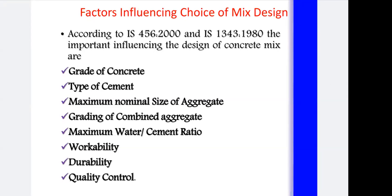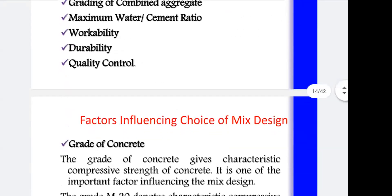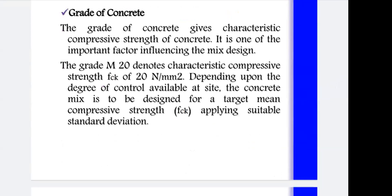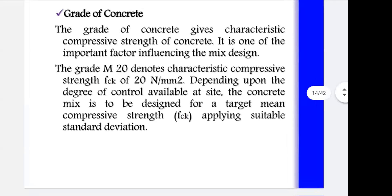The first factor is grade of concrete. The grade of concrete gives the characteristic compressive strength (fck). For example, M20 denotes an fck of 20 N/mm². Depending on the degree of control available at the site, the concrete mix is designed for target mean compressive strength (fck'), which is obtained by applying suitable standard deviation. That is why the numerical was done first, so you understand target strength and standard deviation.